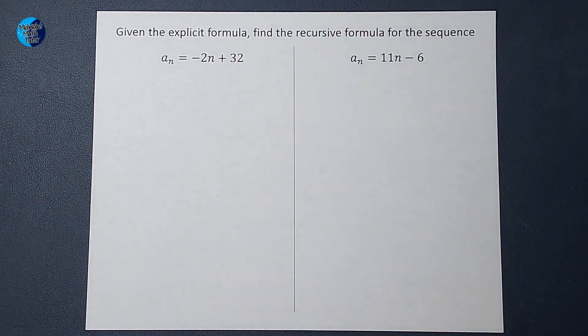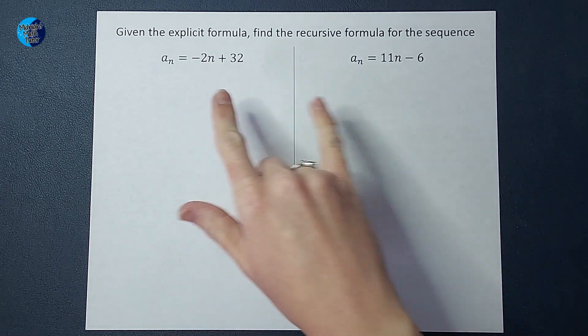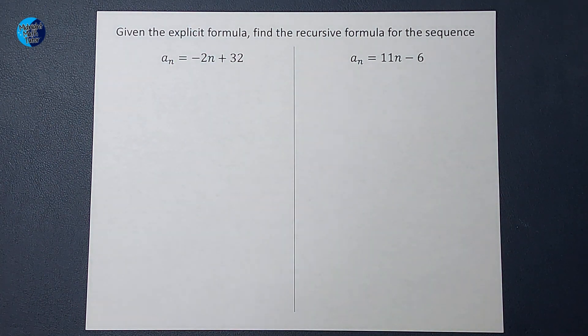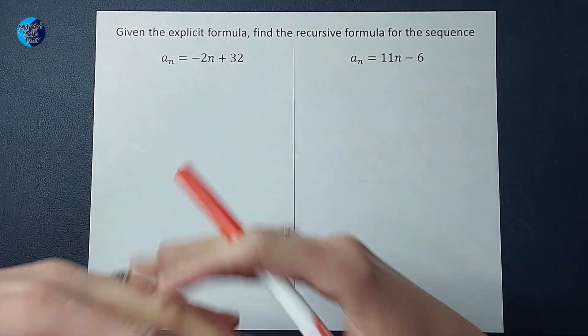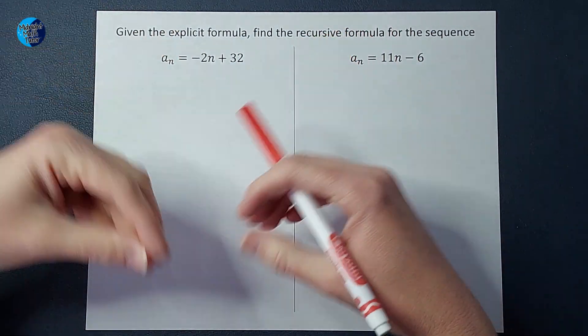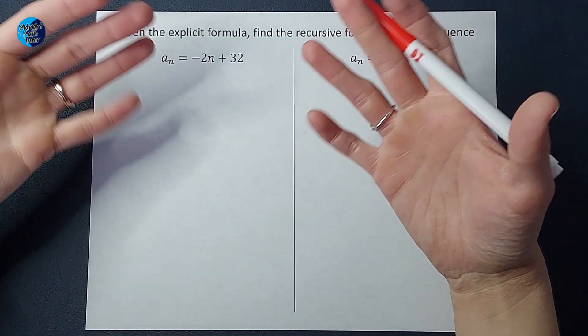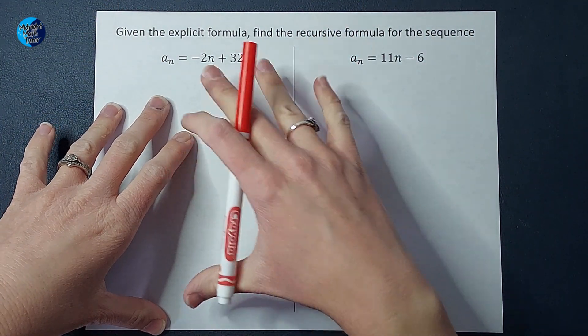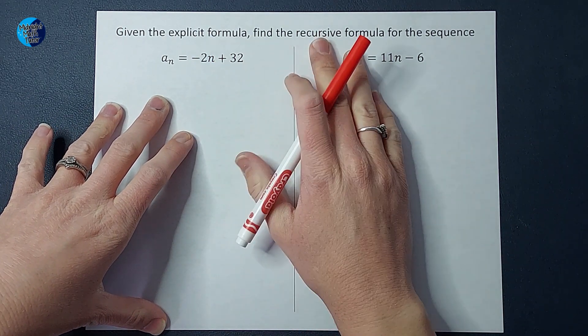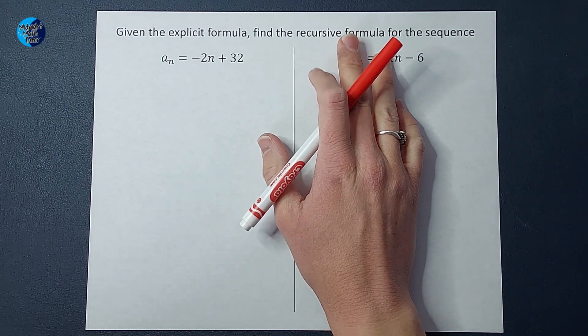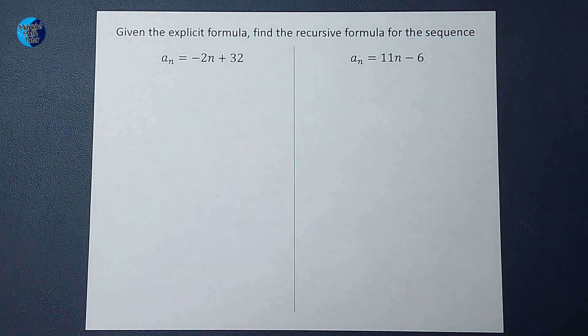All right, so here we have explicit formulas. Now the difference between explicit and recursive formulas is that with an explicit formula, we're referring to sequences, right? We can just plug in, I want to know the 50th term, we can just plug that in to my explicit formula and find it. With a recursive formula, you can also find any term, but you have to know the one before it. If I want to know the 10th term in the sequence, I need to know the ninth. So that is the difference here.